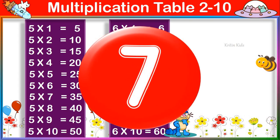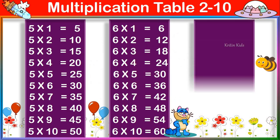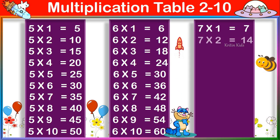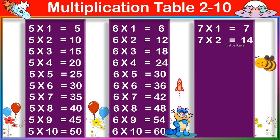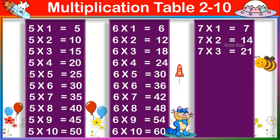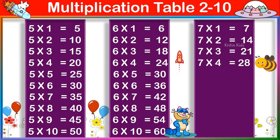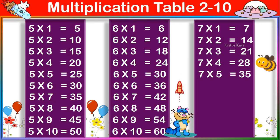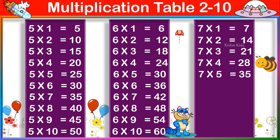Multiplication Table of 7. 7 one's are 7, 7 two's are 14, 7 three's are 21, 7 four's are 28, 7 five's are 35.